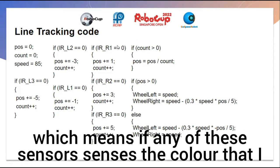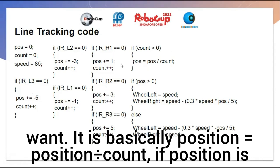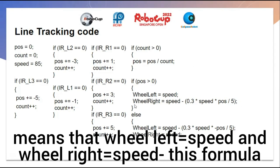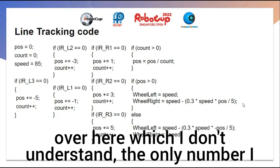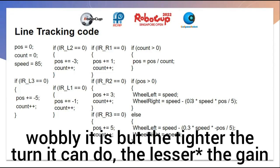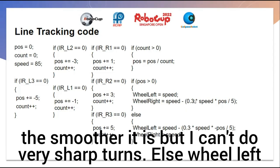If count is more than zero — meaning any of the sensors senses the color I want — then position equals position divided by count. If position is more than zero, the robot thinks the line is on the right side, so wheel left equals speed and wheel right equals speed minus a formula. The gain controls the behavior: higher gain means more wobble but tighter turns, while lower gain is smoother but can't do sharp turns.